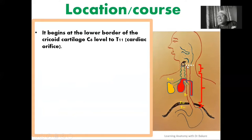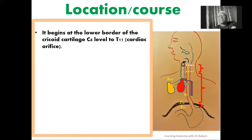The oesophagus descends from C6 through the cervical region, thoracic region, and abdominal region until it reaches the 11th thoracic vertebra, where it expands at the cardiac orifice to become the stomach. The cervical region terminates at T1. From T1 to T10 is the thoracic region, and from T10 to T11 is the short abdominal region, about 1.5 cm. These regions are named according to the space they run through.